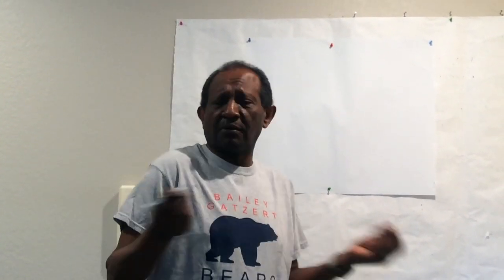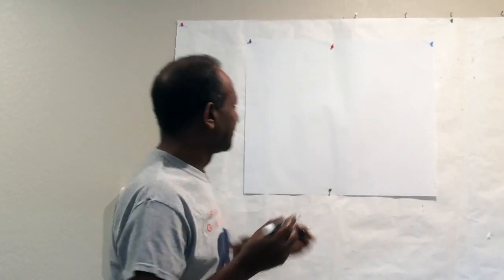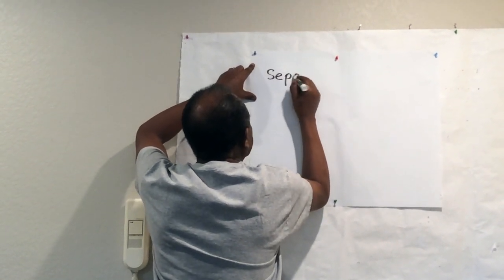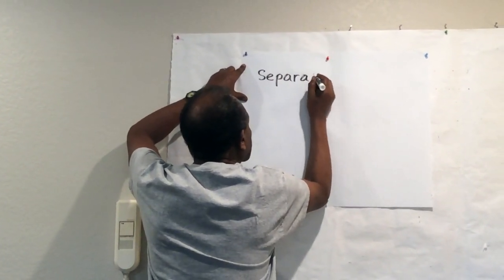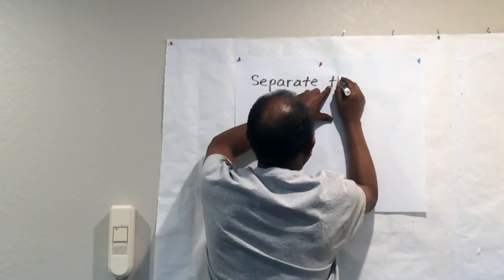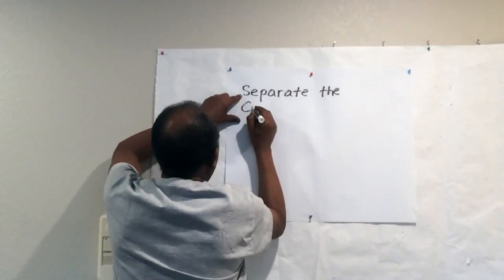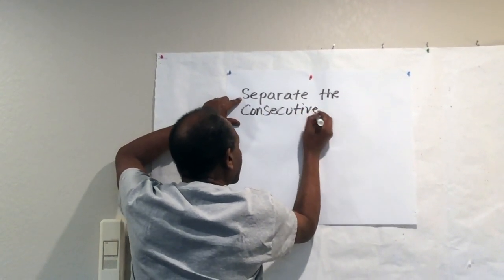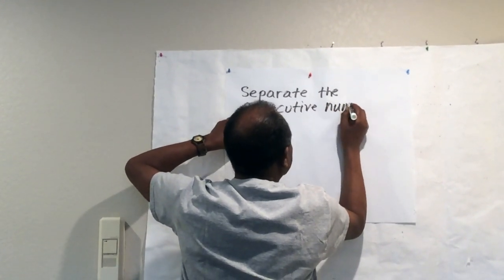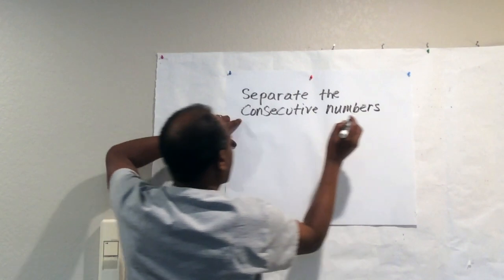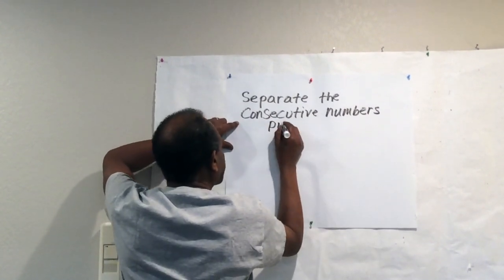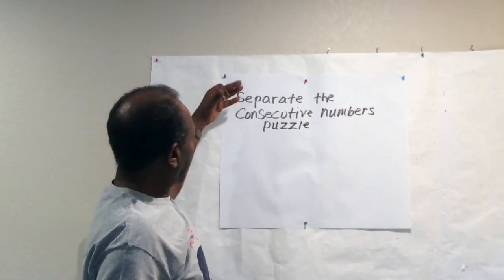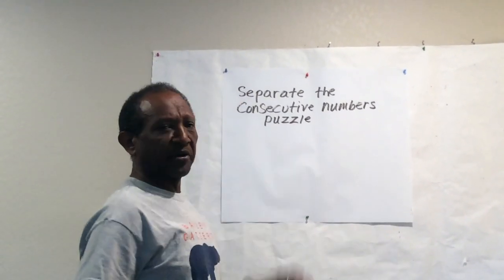First I'm going to tell you the name of this puzzle. The name of this puzzle is called Separate the Consecutive Numbers.